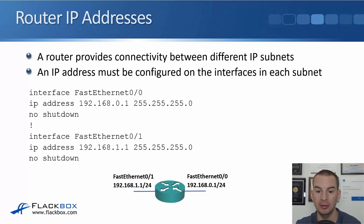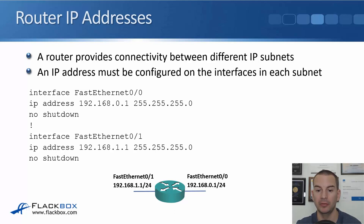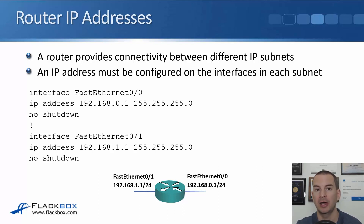The command to put an IP address on an interface — first go to the interface. In the example, we've got a router: interface FastEthernet0/0 on the right has IP address 192.168.0.1/24, and the interface on the left, FastEthernet0/1, has IP address 192.168.1.1/24.